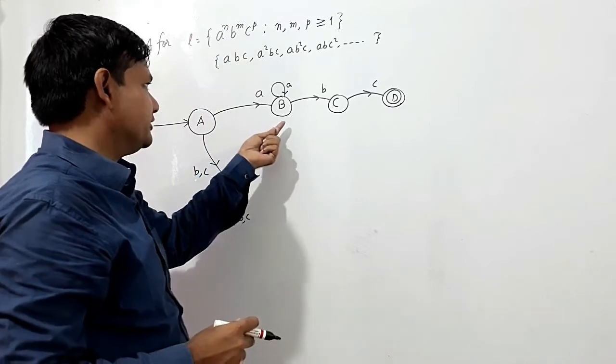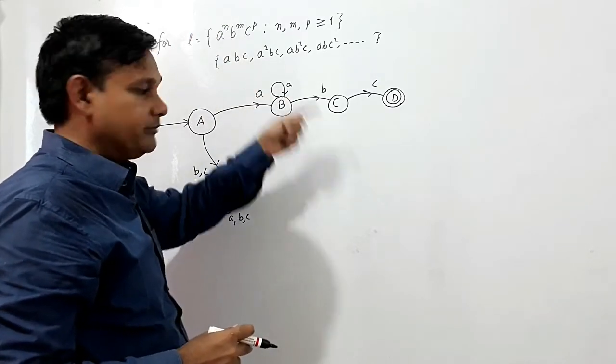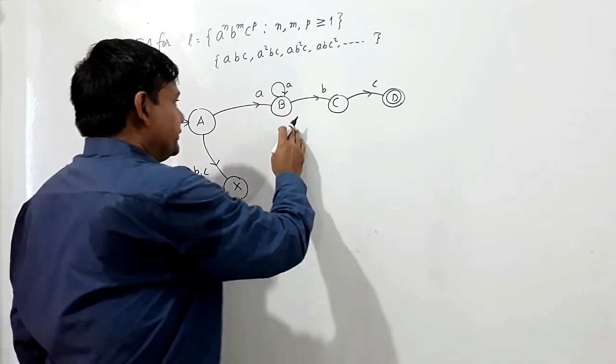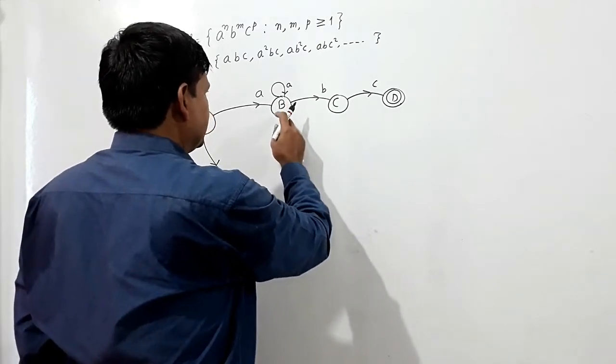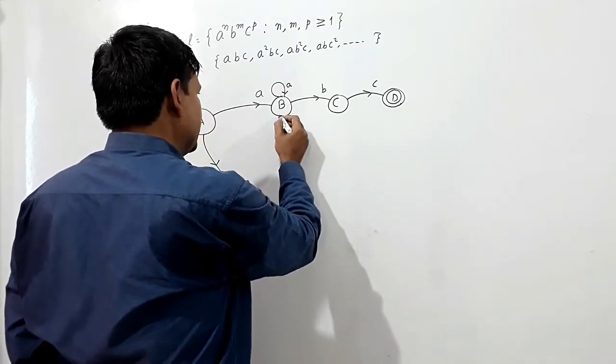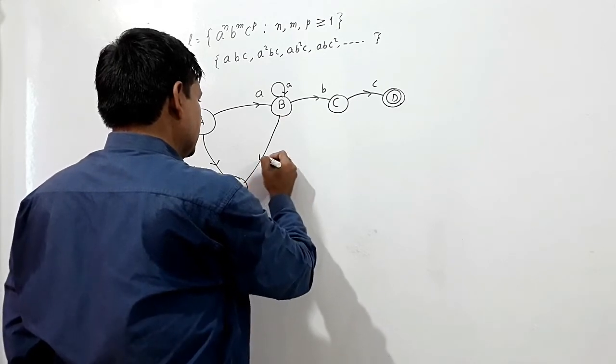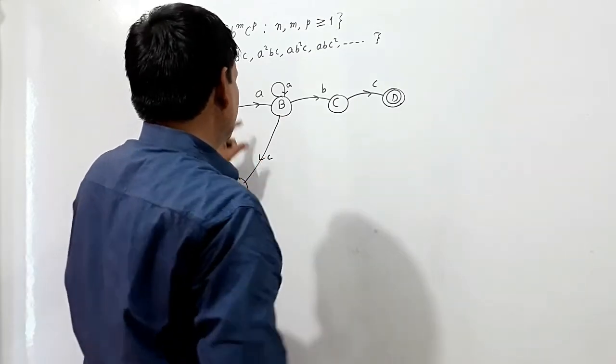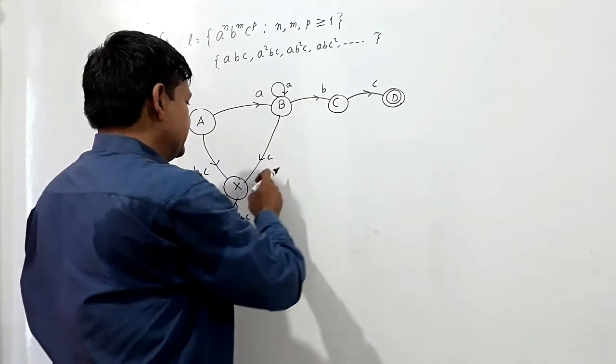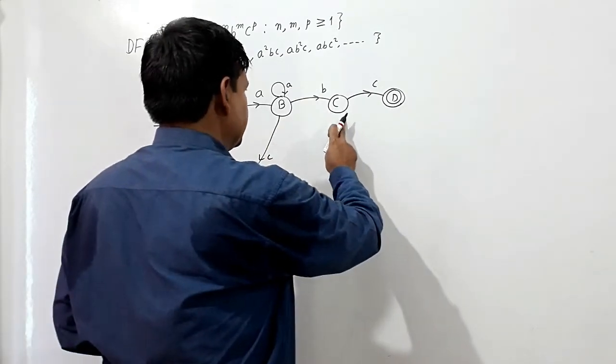So I am making transition in this state. If C comes here after A, it should reach the dead state. So I have shown transition at A, B and C in this state here at C.